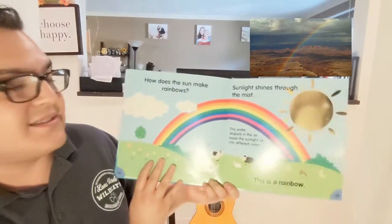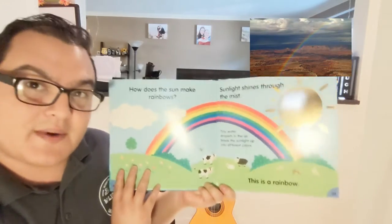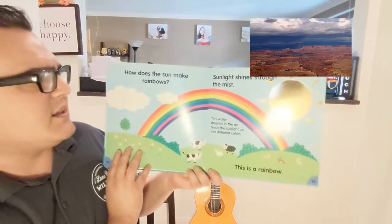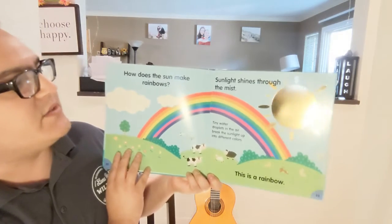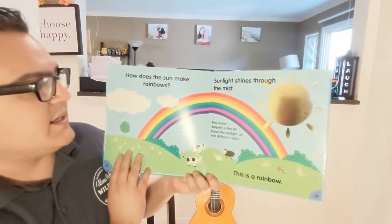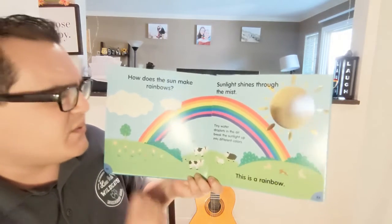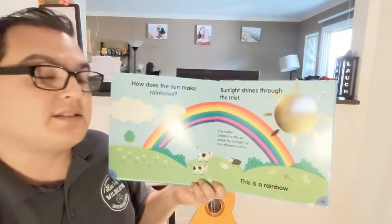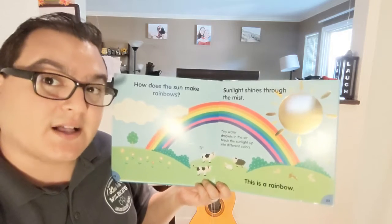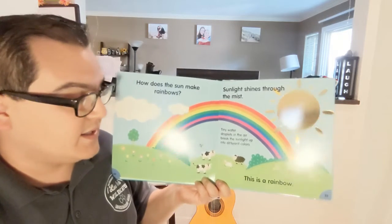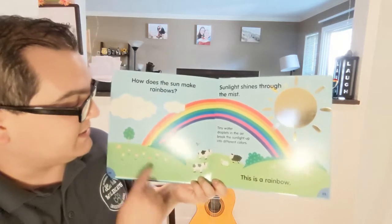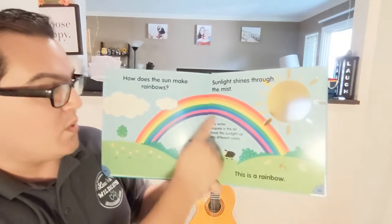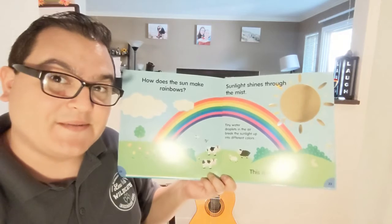How does the sun make rainbows? Sunlight shines through the mist. Tiny water droplets in the air break the sunlight up into different colors. This is a rainbow — wow!